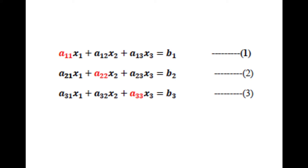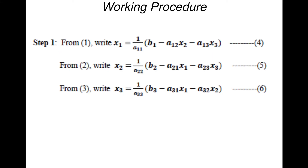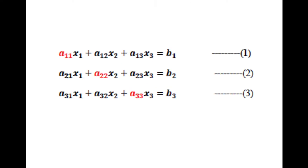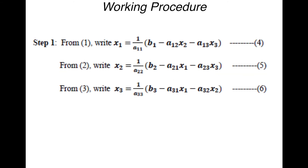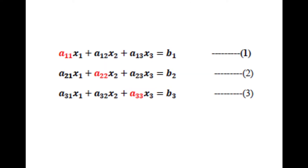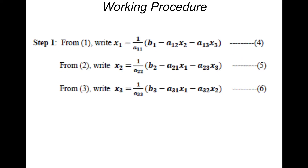To start with, we write an expression for x1 from equation number 1. From equation 1, a11·x1 equals b1 minus a12·x2 minus a13·x3, giving us equation number 4. From equation number 2, we write an expression for x2 by moving two terms to the right-hand side and dividing by a22, giving equation number 5. Similarly, from equation number 3, we write an expression for x3 in terms of x1 and x2 — that is equation number 6.